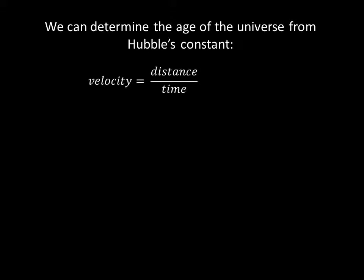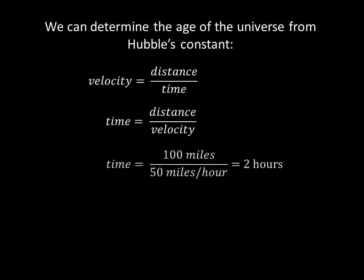We can use Hubble's constant to determine how long the universe has been expanding, which is essentially the age of the universe. The velocity of anything is the distance it travels over the time it takes to travel that distance. To see how long it takes to get anywhere, you divide the distance you traveled by your velocity. For example, if you drive 100 miles at 50 miles per hour, it takes you 2 hours.